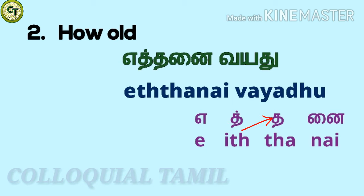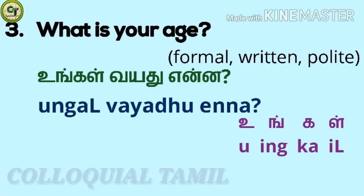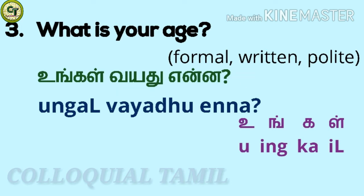For 'ethanai': a short sound vowel with a consonant, the short sound letter 'nai' — together: ethanai. Ethanai vayadu. You have learned 'what is the name' — 'unggal pair enna' — in the self introduction Tamil part 1 video. Here, in the place of 'pair', you put 'vayadu'. So: 'unggal vayadu enna'. This is the formal form, which is also the written and polite form.